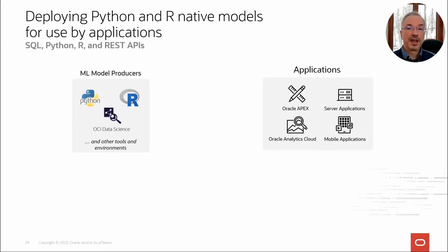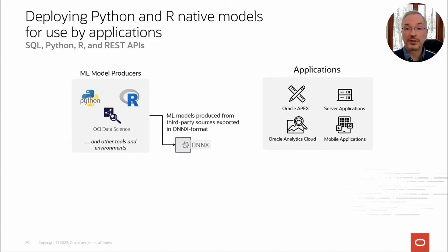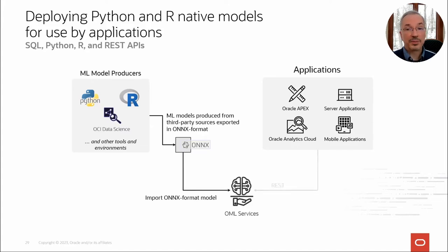One last deployment option involves models produced using third-party tools deployed to OML Services. Users can produce models outside the database using OCI Data Science or local Python or R environments that might leverage GPU compute resources. These models can be built using third-party packages like TensorFlow and then exported in ONNX format. ONNX is an open format built to represent machine learning models, and using the REST interface, they can be imported to OML Services. Enterprise applications and dashboards can then use these models to make predictions using the same REST API as for in-database models.